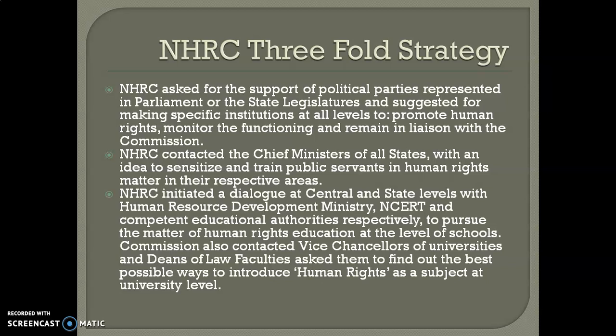Now the threefold strategy of NHRC: First, NHRC asked for support of political parties represented in parliament or state legislatures and suggested making specific institutions at all levels. NHRC asked the government — whether at the center or state level — to establish institutions at all levels: central, state, and district. These institutions would help in promoting and monitoring human rights, and they should remain in contact and cooperate with NHRC so that human rights can be established at all levels in the country.